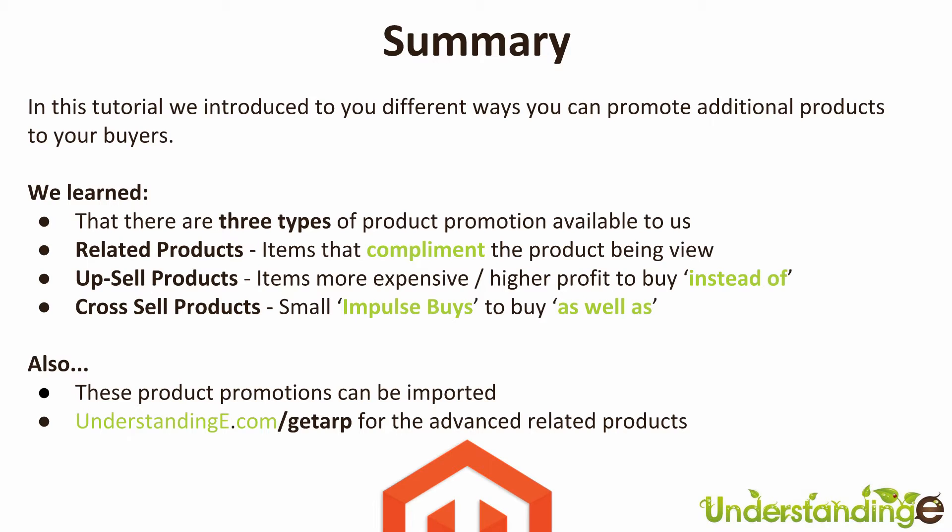Finally, Magento doesn't automatically set up related products for you — you'll need to rely on a third-party extension. The one we suggest, which we've both used personally on client websites, is from Headworks. You can read more at understandinge.com/get-arp which links to the Headworks website. For those with very large catalogues, this extension will save you a lot of time — with more than a couple of hundred products it's almost physically impossible to do manually.